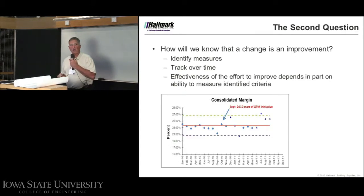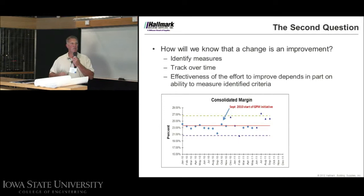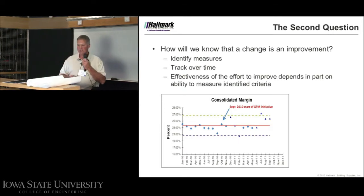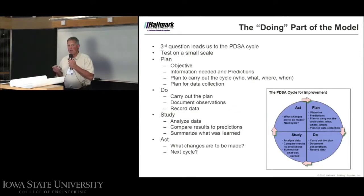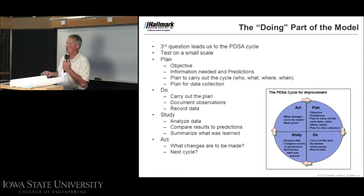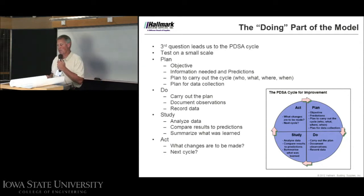The second question — how do we know a change is an improvement? How are we going to keep score? If we're going to make a change, what is it going to look like compared to where we are today? And the third question — what changes can we make? We're all good at coming up with 27 things we could change. We may not be as good at answering the first question, but we're really good at this one.